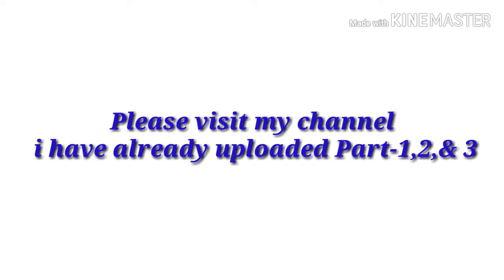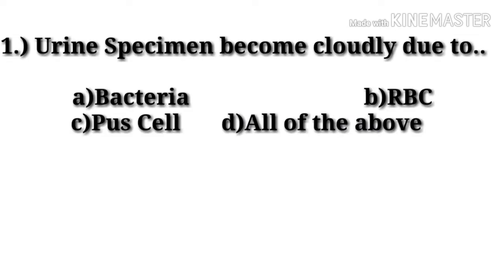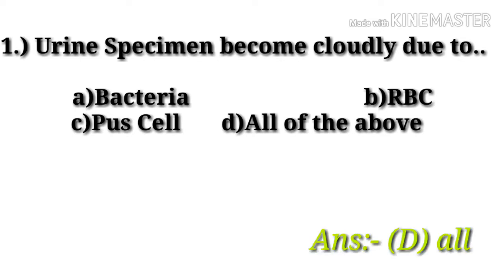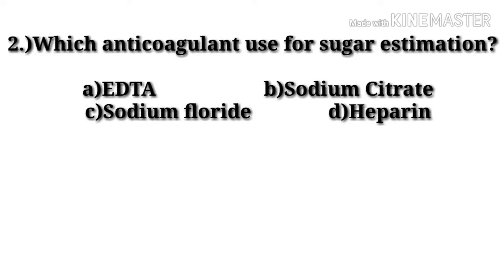So let's start. Our first question: using a specimen, it becomes cloudy due to — option A: bacteria, option B: RBC, option C: pastel, option D: all of the above. Option D, all, is the right answer.